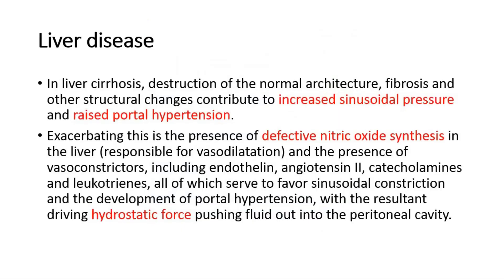For liver disease, in liver cirrhosis, destruction of the normal architecture, fibrosis, and other structural changes contribute to increased sinusoidal pressure and raised portal hypertension. Exacerbating this is defective nitric oxide synthesis in the liver, which is responsible for vasodilatation, and the presence of vasoconstrictors including endothelin, angiotensin-2, catecholamines, and leukotrienes, all of which favor sinusoidal constriction and the development of portal hypertension, with the resultant driving hydrostatic force pushing fluid out into the peritoneal cavity.